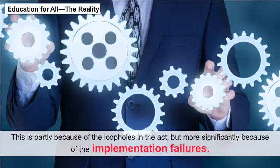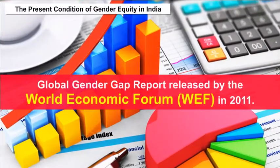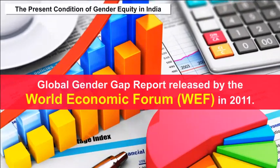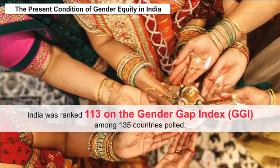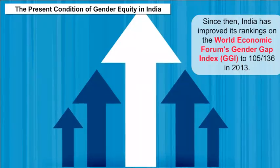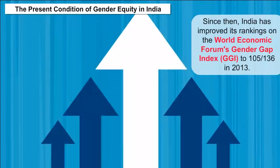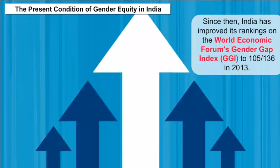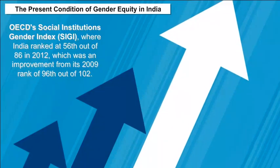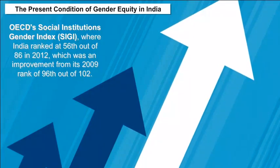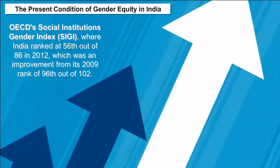The Present Condition of Gender Equity in India: According to the Global Gender Gap Report released by the World Economic Forum in 2011, India was ranked 113 on the Gender Gap Index (GGI) among 135 countries polled. Since then, India improved its ranking to 105 out of 136 in 2013. In the OECD's Social Institutions Gender Index (SIGI), India ranked 56th out of 86 in 2012, an improvement from its 2009 rank of 96th out of 102.